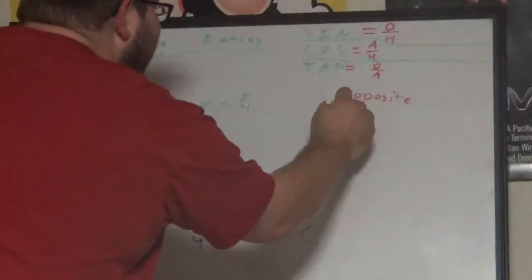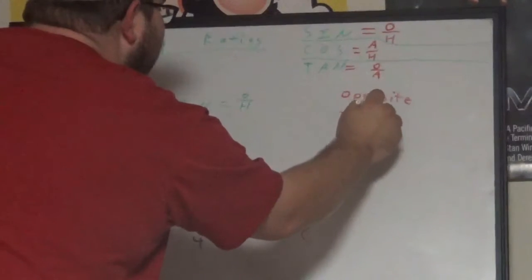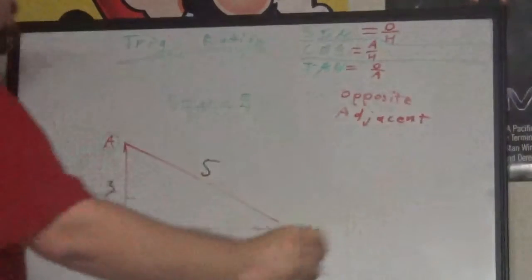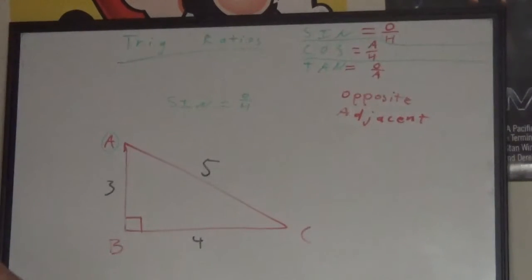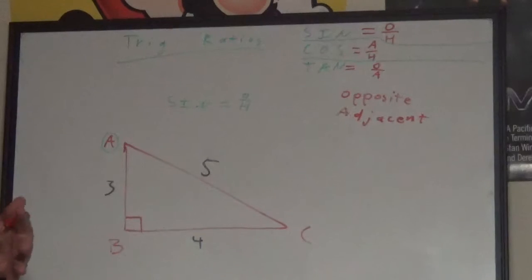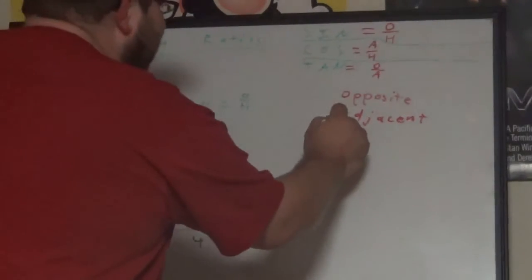A stands for adjacent. Adjacent means next to, or beside - that is the leg beside your angle. Opposite is the leg opposite your angle that's not connected to it. Third, H is hypotenuse.